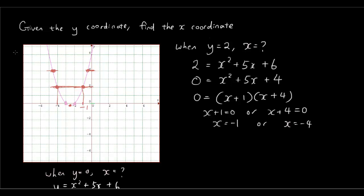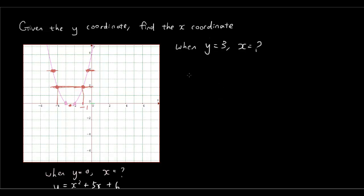We can see that this matches our graph: when y equals 2, x equals negative 1 and negative 4. Now this method only works when the coordinates are whole numbers, so let's try an example when the coordinates are not whole numbers. When y is equal to 3, what's x? Looking at the graph, x is not a whole number — it's somewhere between negative 0.5 and negative 1 on one side, and between negative 4 and negative 4.5 on the other.